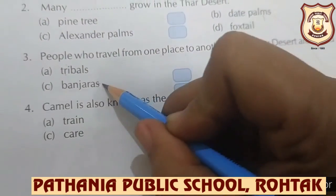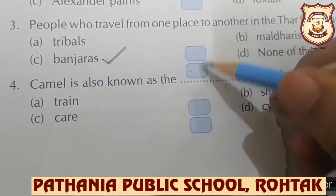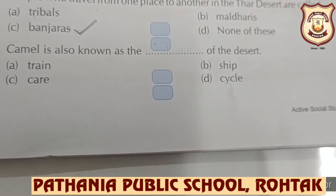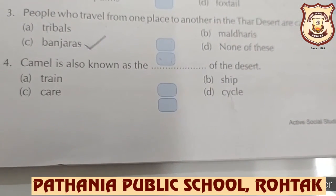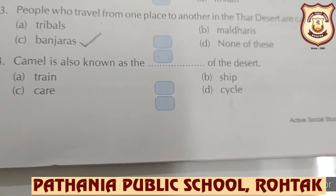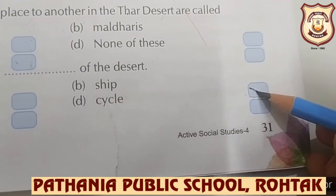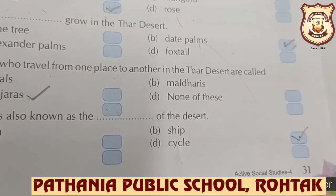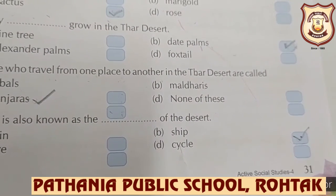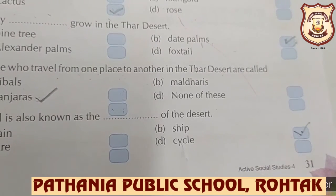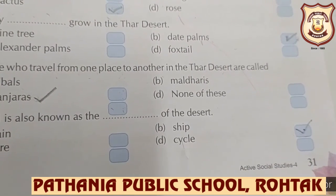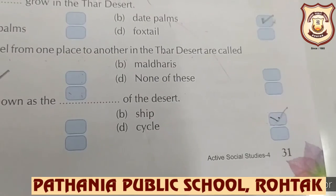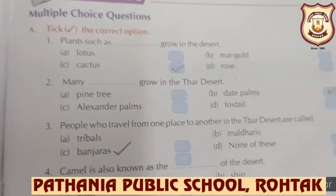Number four: camel is also known as the dash of the desert — ship, cure, or cycle? Everybody will put a tick in front of ship. We call the camel the ship of the desert because it is the most important animal in this area, it can live without water for many days, and can walk easily on sand. The camel is popularly called the ship of the desert, so put a tick on ship.